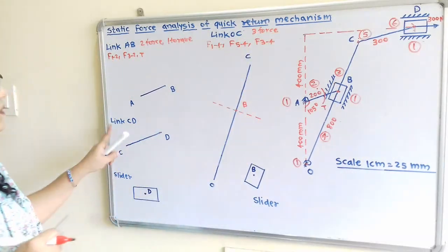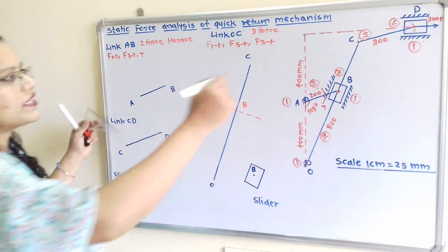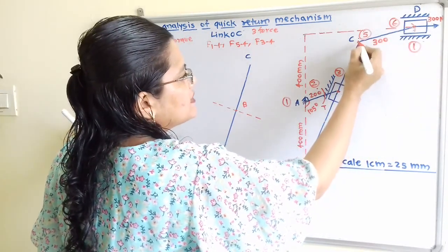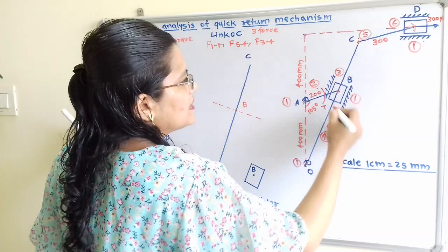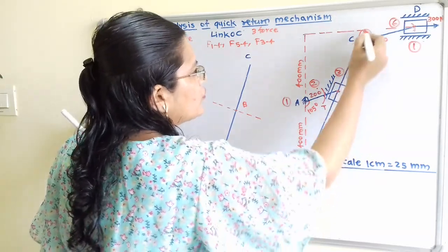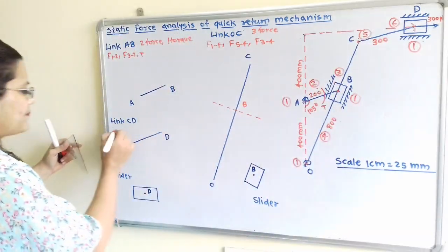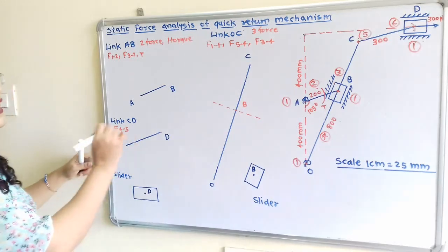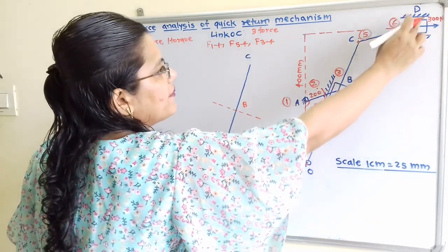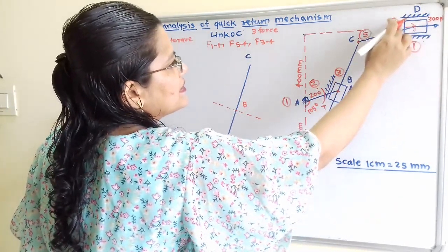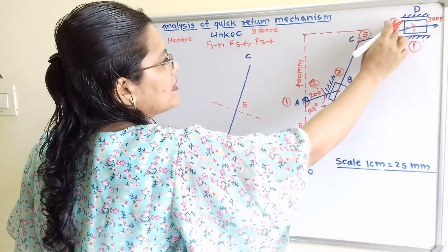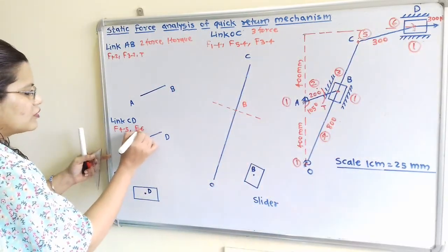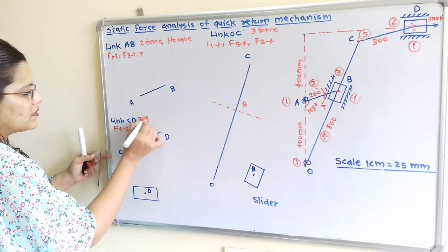For link CD: through point C the force applied is F of 4 to 5, and through point D there is a slider with link 6, so the force is F of 6 to 5. This makes link CD a two-force member.